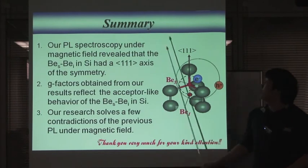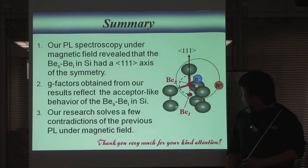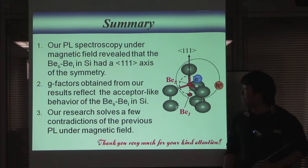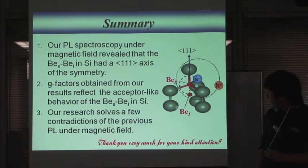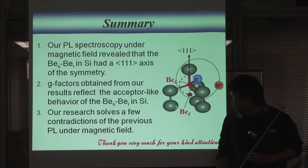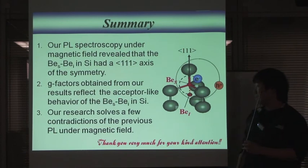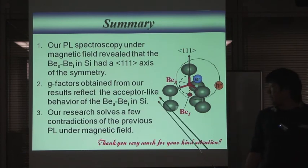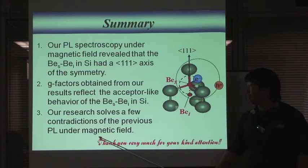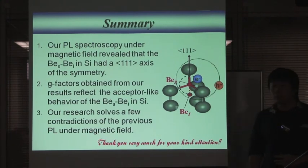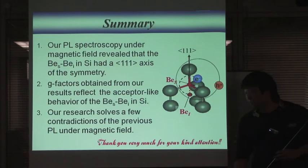Summary of this topic. First, our PL spectroscopy under magnetic field revealed that the barium pairs in silicon have a 111 axis of symmetry. Second, the g-factors obtained from our results reflect the acceptor-like behavior of the barium pairs in silicon, and our research resolved a few contradictions of the previous photoluminescence study under magnetic field. This concludes my first topic. Thank you very much for your kind attention.